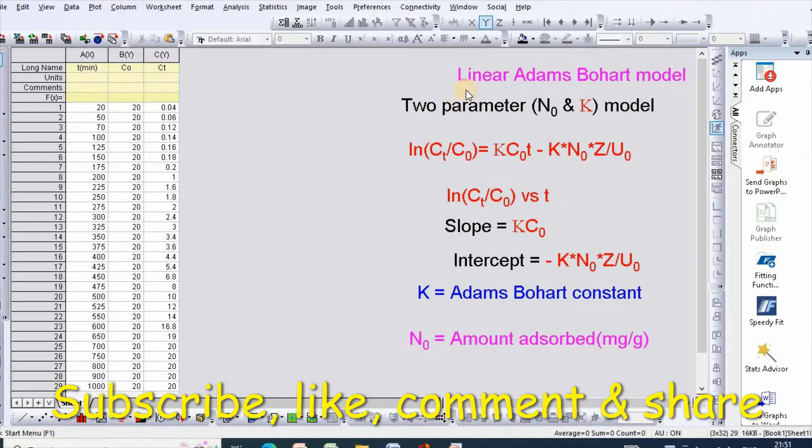Linear Adam's Bohart model is a typical two-parameter model and the equation can be written as ln(Ct/C0) equal to kC0t minus kN0z divided by U0.